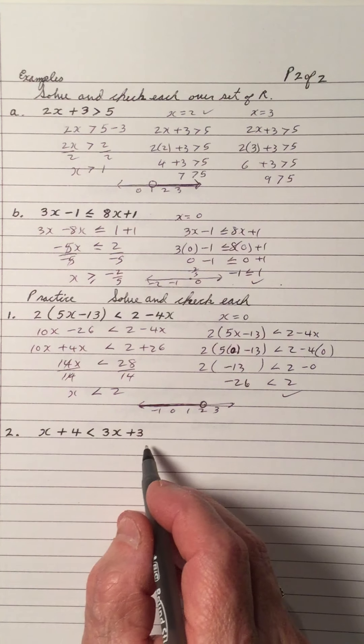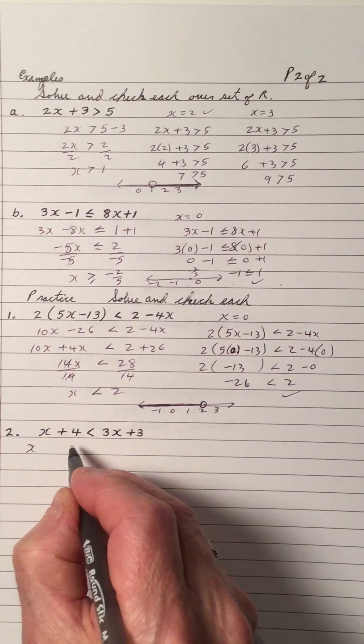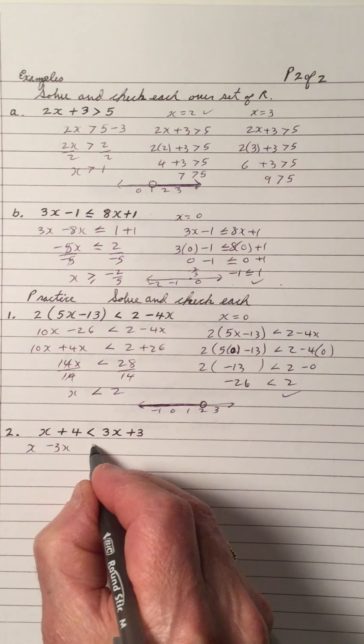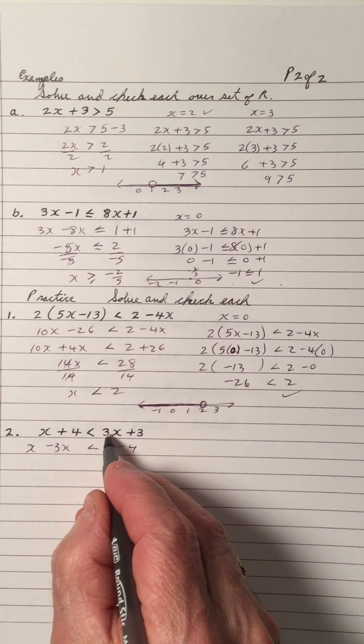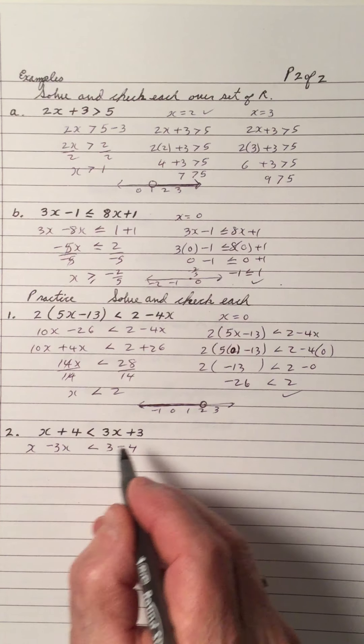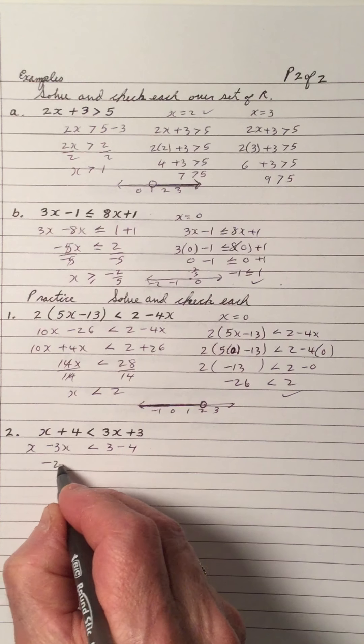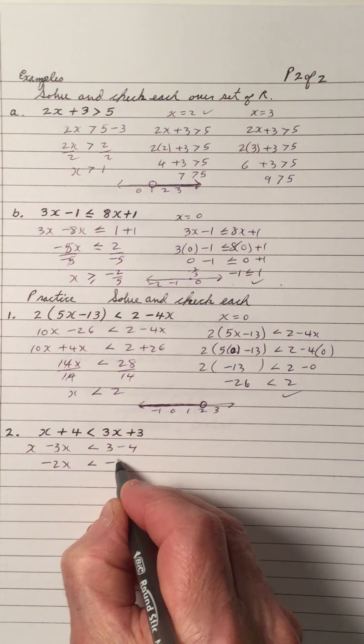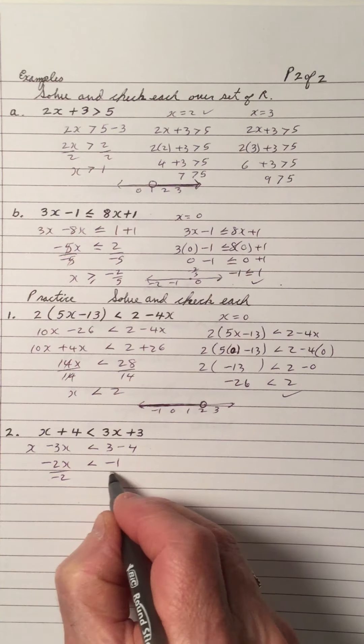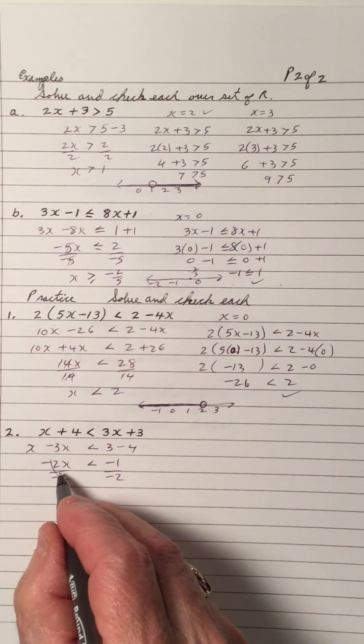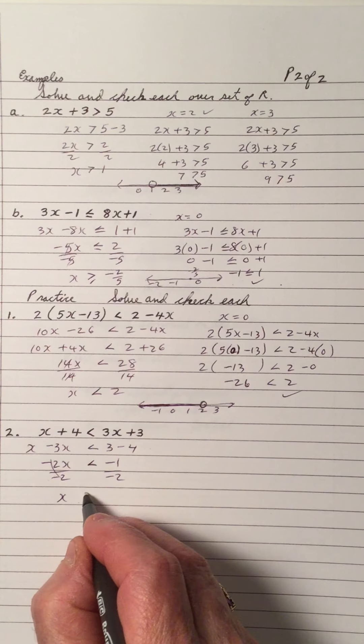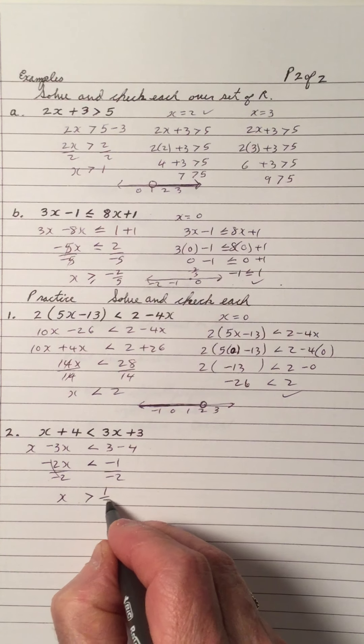And number 2. Let's work this one out. X's go on the left. Numbers go on the right. And positive becomes a negative. And positive becomes a negative. That's negative 2x is less than negative 1. Divide both sides by negative 2. They cancel out. They give me 1x. Because I divided by negative, the less than becomes a greater than. And I get 1 half.